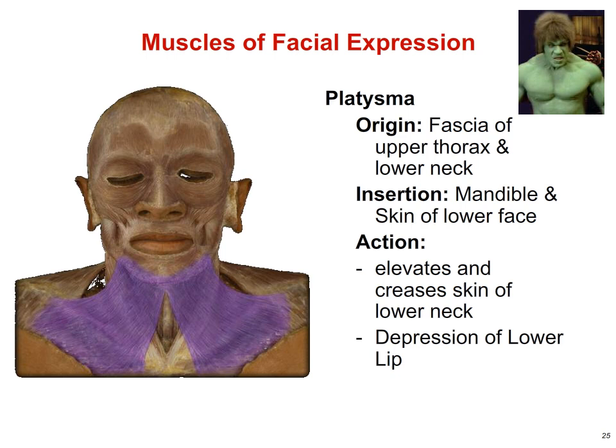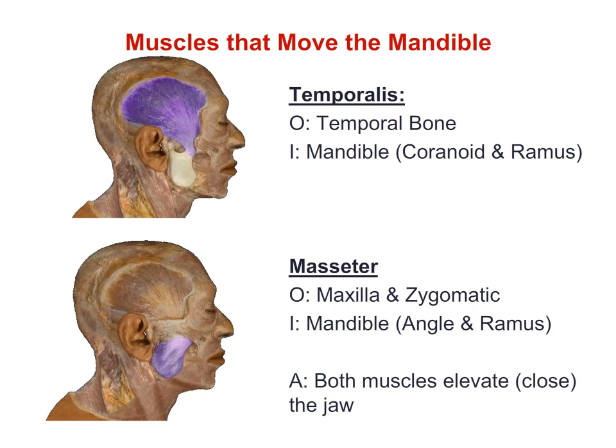We also see contraction of the platysma when somebody is straining or lifting a heavy load. The muscles more important than facial expression are those that close the jaw. The two I'd like you to know are the temporalis and the masseter. The temporalis originates on the squamous part of the temporal bone, with insertion on the coronoid portion and ramus of the mandible. The masseter originates on the maxilla and zygomatic bones and inserts on the ramus and angle of the mandible. Both are important for elevating or closing the jaws during mastication — the masseter being the most important, with the temporalis a close second.